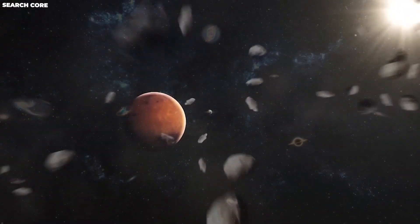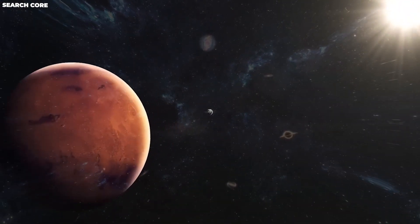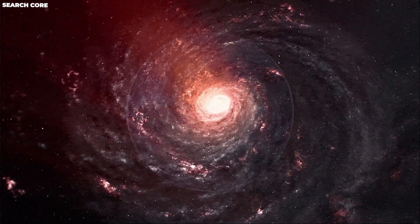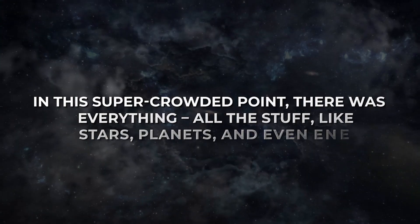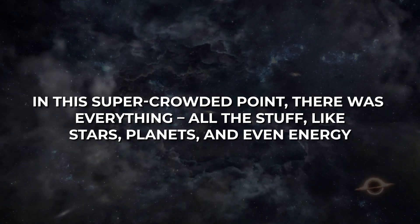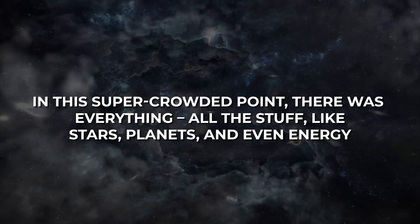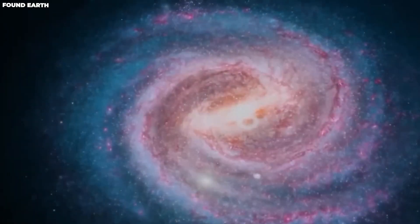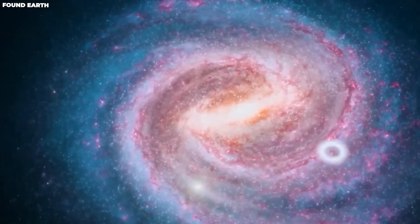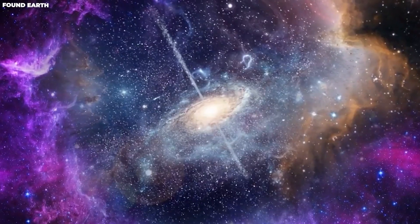Imagine everything in the universe squished into a teeny tiny super duper crowded point. That's what the Big Bang Theory says happened at the very beginning. This super crowded point had everything. All the stuff. Stars, planets, and even energy. It's like having all the ingredients for a giant cosmic cake in one tiny kitchen.